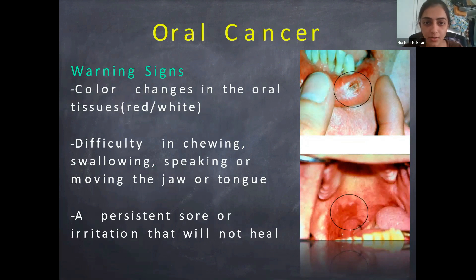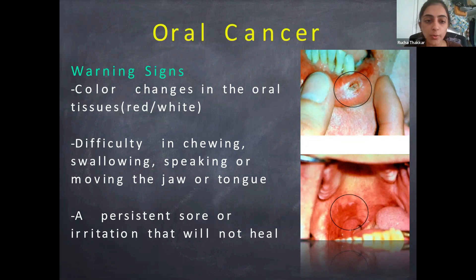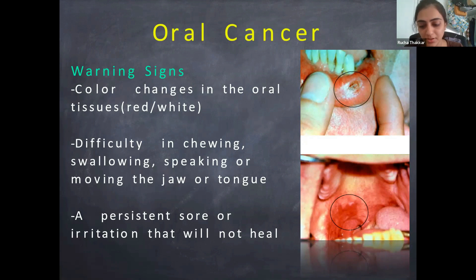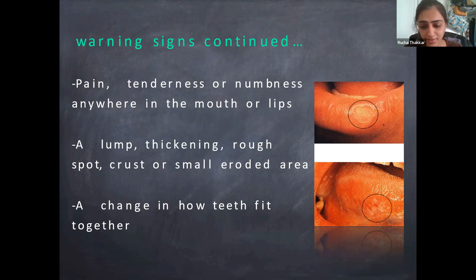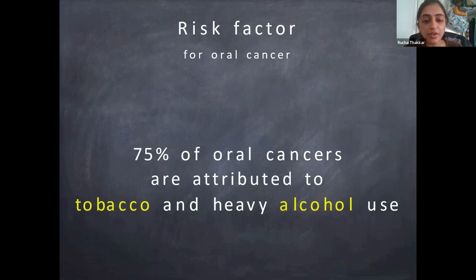Oral cancer can be identified by color changes in oral tissue — red or white — as well as difficulty chewing, swallowing, speaking, or moving the jaw or tongue. A persistent sore or irritation that won't heal is also a sign. Warning signs include pain, tenderness, or numbness anywhere in the mouth or lips, a lump or thickening rough spot, crust, or small eroded areas, and a change in how teeth fit together. Seventy-five percent of oral cancers are attributed to tobacco and heavy alcohol use.